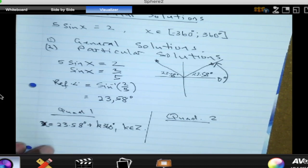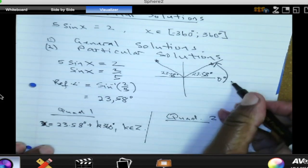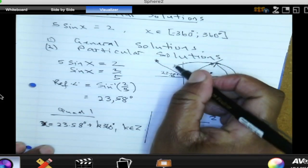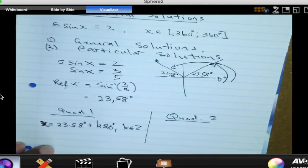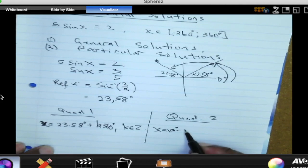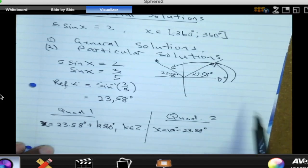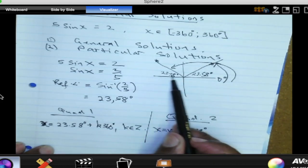Now let's go to quadrant 2. In quadrant 2, starting from 0 you move like that. So this is the angle that we want. How many degrees is that, and that is still going to be X.